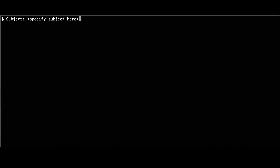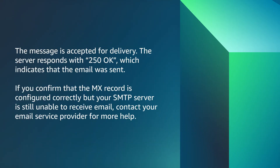Enter the remaining SMTP commands, pressing Enter after each one. The message is accepted for delivery. The server responds with 250 OK, which indicates that the email was sent. If you confirm that the MX record is configured correctly but your SMTP server is still unable to receive email, contact your email service provider for more help.